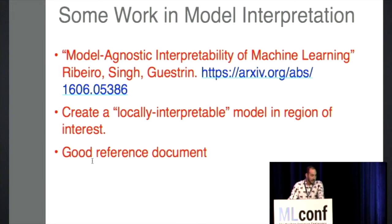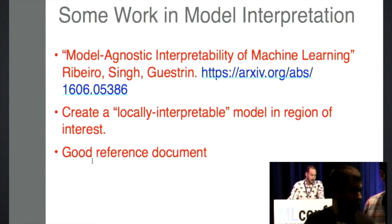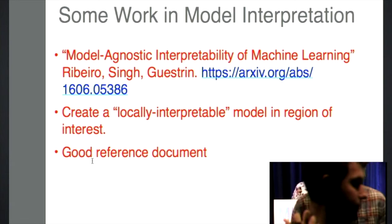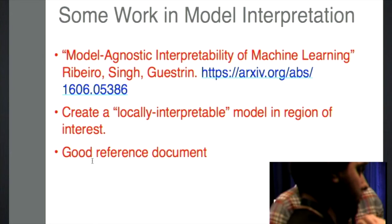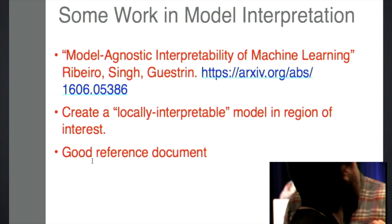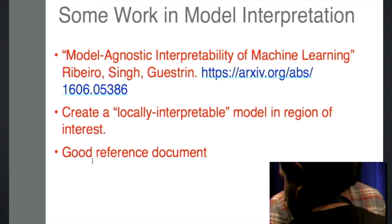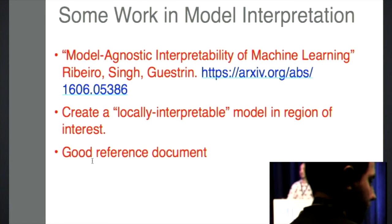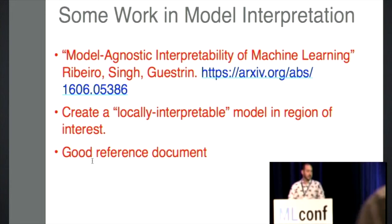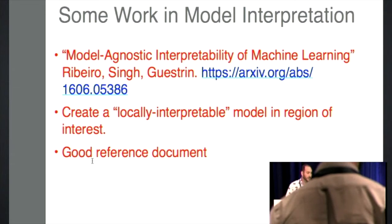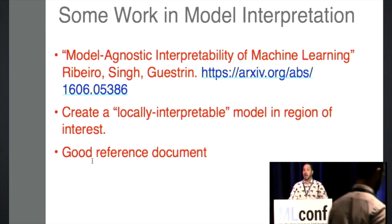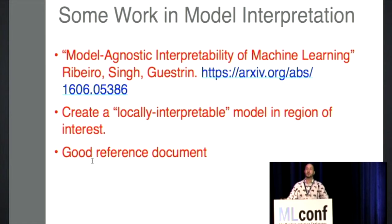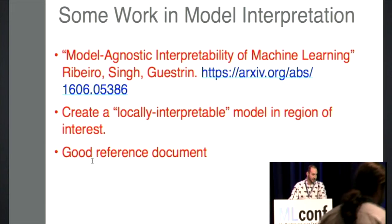Another recent reference — I only found it on arXiv — is by Ribeiro, Singh, and Guestrin. Their idea is to create a locally interpretable model in the region of interest. You've got a very complicated model, but locally you come up with something simple and therefore interpretable and use that to create your interpretations. It's a very good reference document; they do a thorough job of going through all past work more so than I'm able to do in this talk.